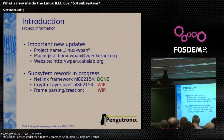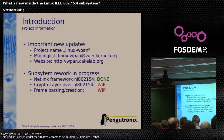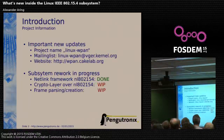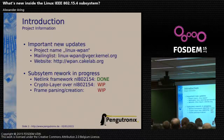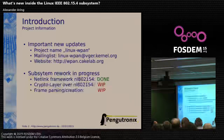We have a crypto layer, but we can't nicely access this crypto layer from user space, so we need to add more support for this. The frame parsing and generation is more specific to particular frame types — we have different frame types like wireless. We need to parse and generate beacon frames, command frames, and so on.